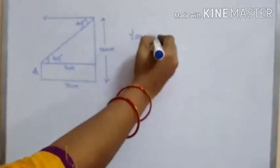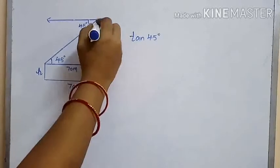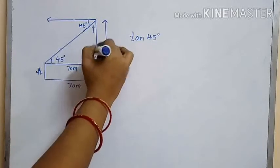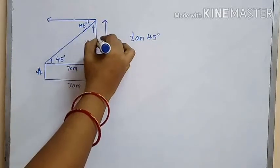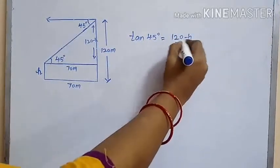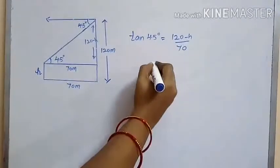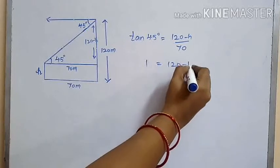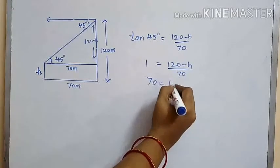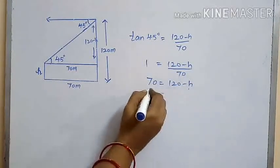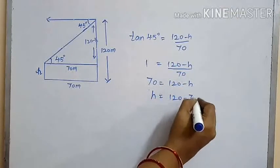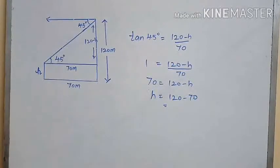From this triangle, tan 45 is equal to the opposite side, which is 120 minus H, divided by the adjacent side, which is 70. We know that tan 45 is equal to 1, so 1 = (120 − H) / 70. Therefore, 70 = 120 − H, so H = 120 − 70 = 50 meters.